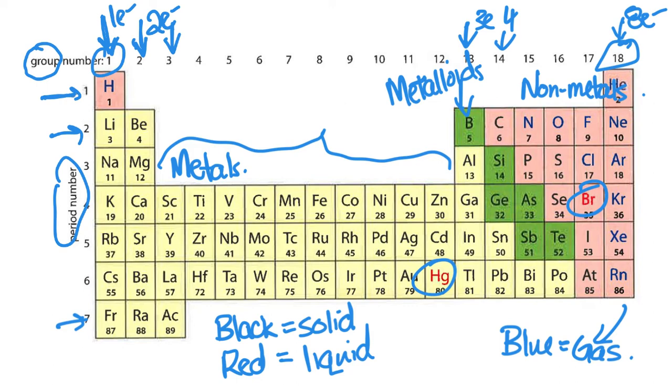If we look at the periods, this tells us how many main energy levels or number of shells that we have. So for period 1 we have one shell, for period 2 we have two, and all the way down to period 7 we have seven main energy levels.